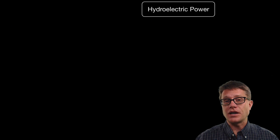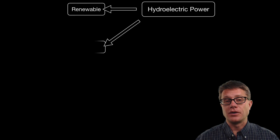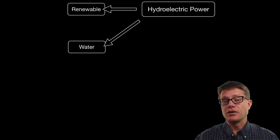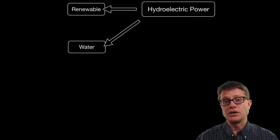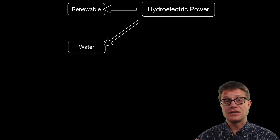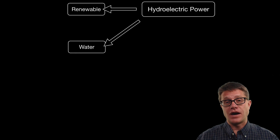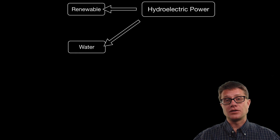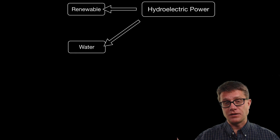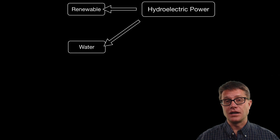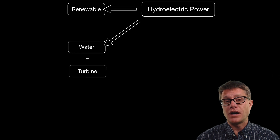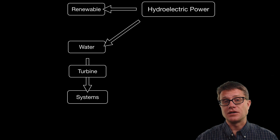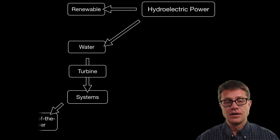So what is hydroelectric power? It is power through the movement of water, and we call it renewable. The reason why is it is really the sun — the sun is evaporating the water, it is moving up, and as it falls down again we can move that water through a turbine and generate electricity.